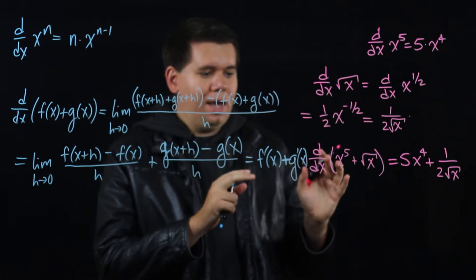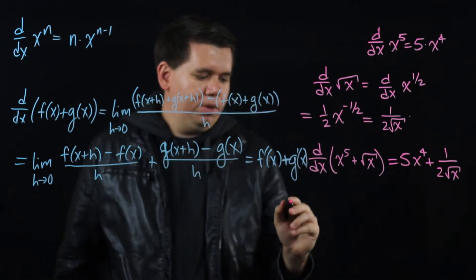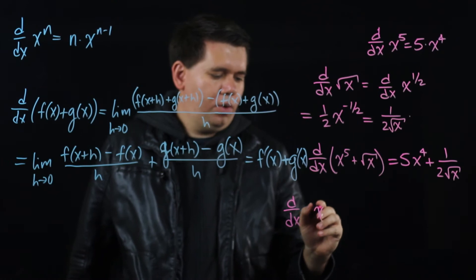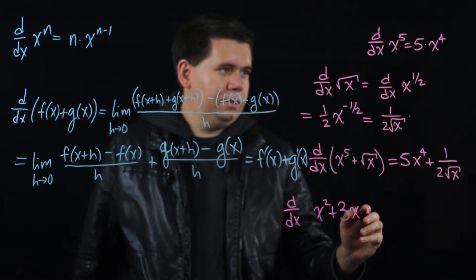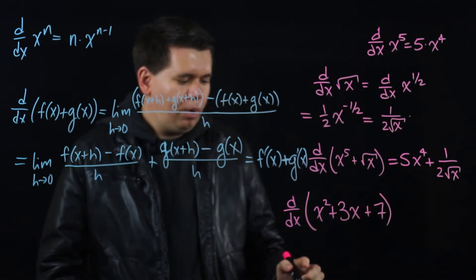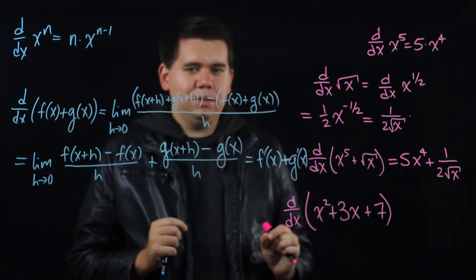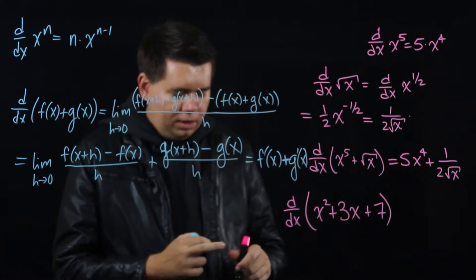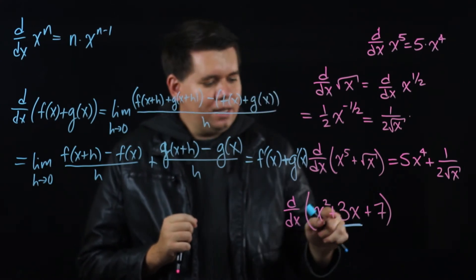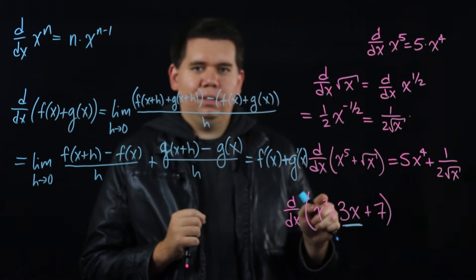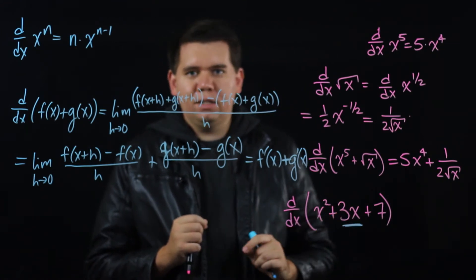We're almost there — we can almost now find the derivative of any polynomial. Given a polynomial like x squared plus 3x plus 7, we know the derivative is going to be the derivative of each of its pieces. But wait — this second piece isn't just x to some power; it's 3 times a power of x, 3 times x. What do you do when you have a constant in front of your function?